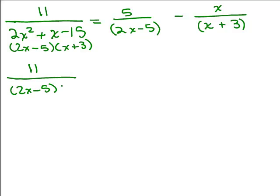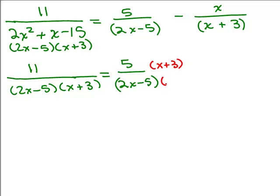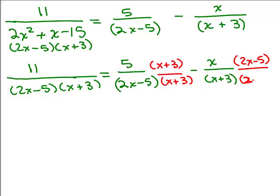Let's see if we could write everything with the same denominator. So this already has the least common denominator. Next term, on the right side of the equal side, I've got 5 over 2x minus 5. But I don't have my factor of x plus 3. So I need to multiply the top and bottom by x plus 3 to get the same denominator. And then over here we have x over x plus 3, and I need to multiply this by the 2x minus 5.